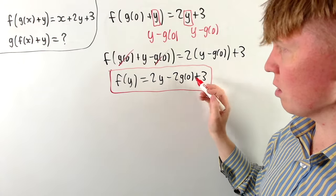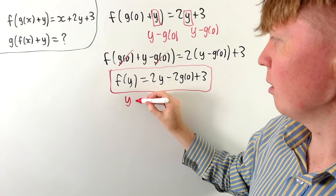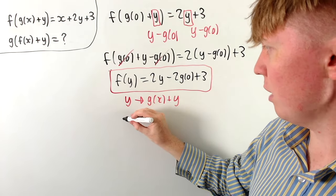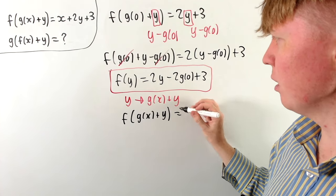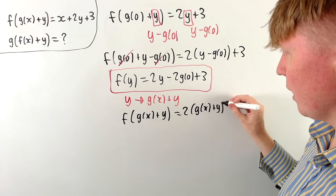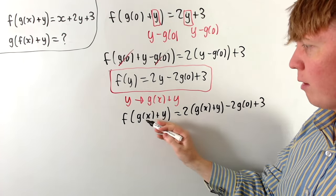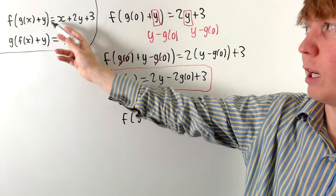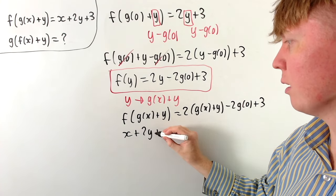We can use this fact now alongside our original equation. If we replace y by g of x plus y in our expression for f of y, then on the left hand side we'll have f of g of x plus y again. We get 2 times g of x plus y minus 2g(0) plus 3, which equals f of g of x plus y. And we know f of g of x plus y is also equal to the nicer expression x plus 2y plus 3.